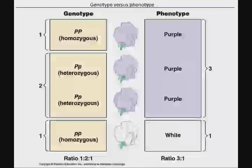Genotype imposed on phenotype: when we look at the final generation, we see the classic 3-to-1 phenotype ratio. But on a deeper level, the genotype shows it's actually a 1:2:1 ratio — only one of the four is homozygous dominant, two are heterozygous, and one is homozygous recessive. The homozygous recessive is a great plant because you can always tell its genotype. If it's white, it's got to be little p, little p. If it's purple, you don't know if it's big P, little p or big P, big P.